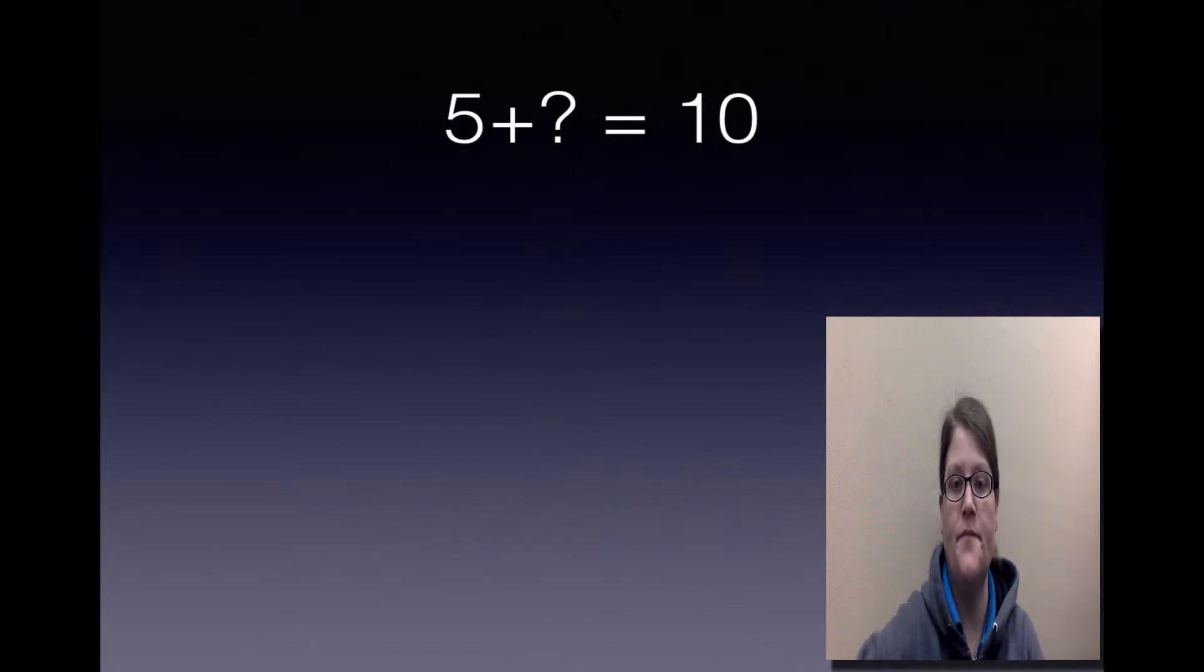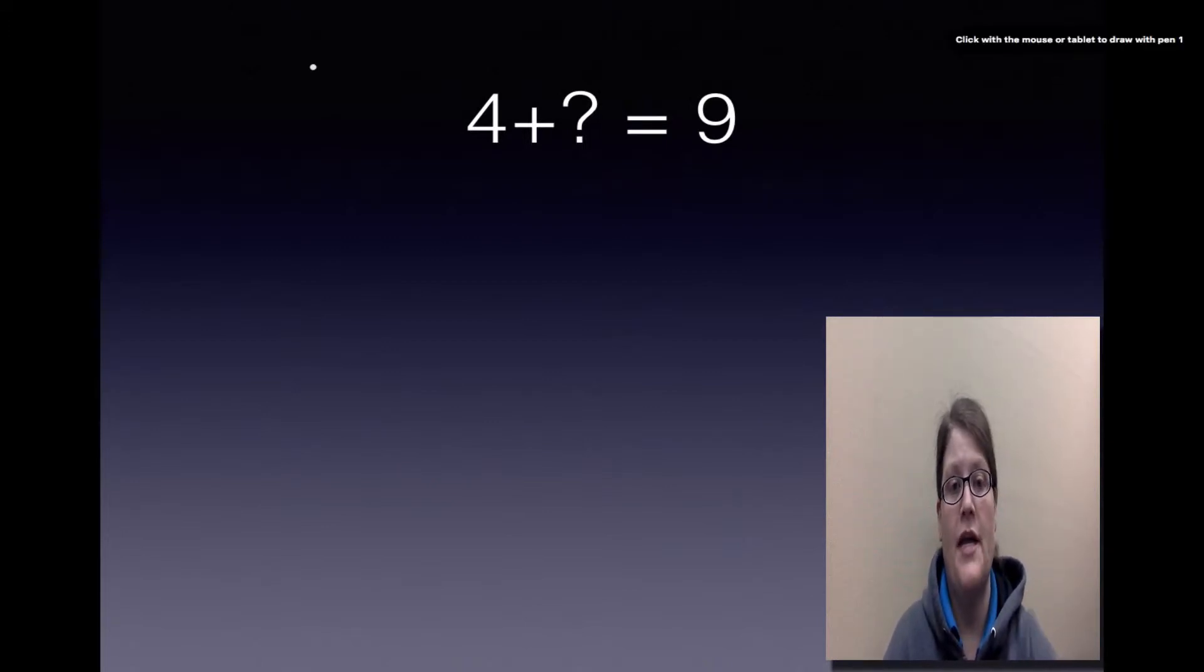Let's try another one. 4 plus the unknown addend equals 9. We're going to count on from 4, and we'll stop at 9, because 9's the sum: 4, 5, 6, 7, 8, 9.